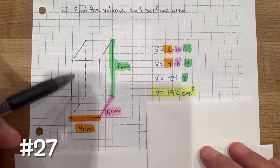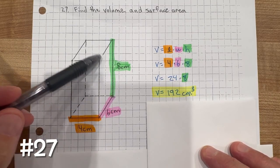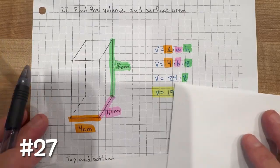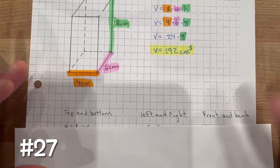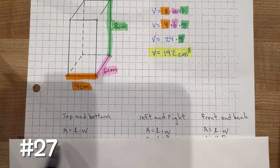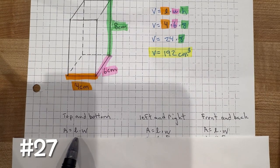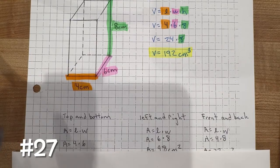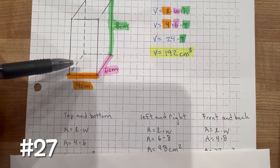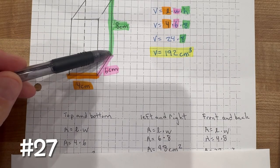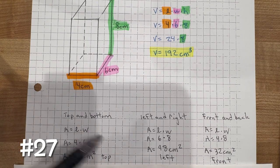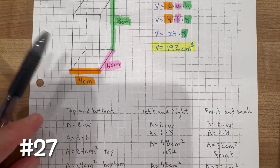Now to find the surface area, we need to find the area of each face: left and right, top and bottom, and front and back. All of these faces are rectangles, so each has area equal to length times width. For the top and bottom, they're the same: 4 times 6 is 24 square centimeters each.